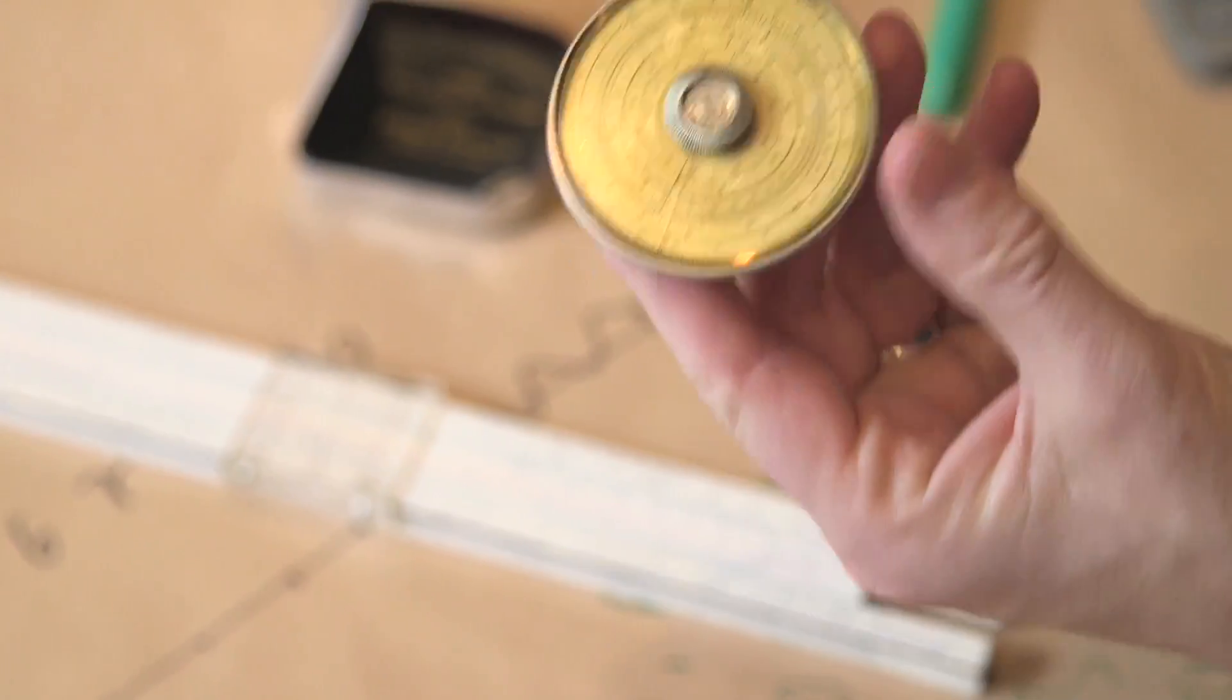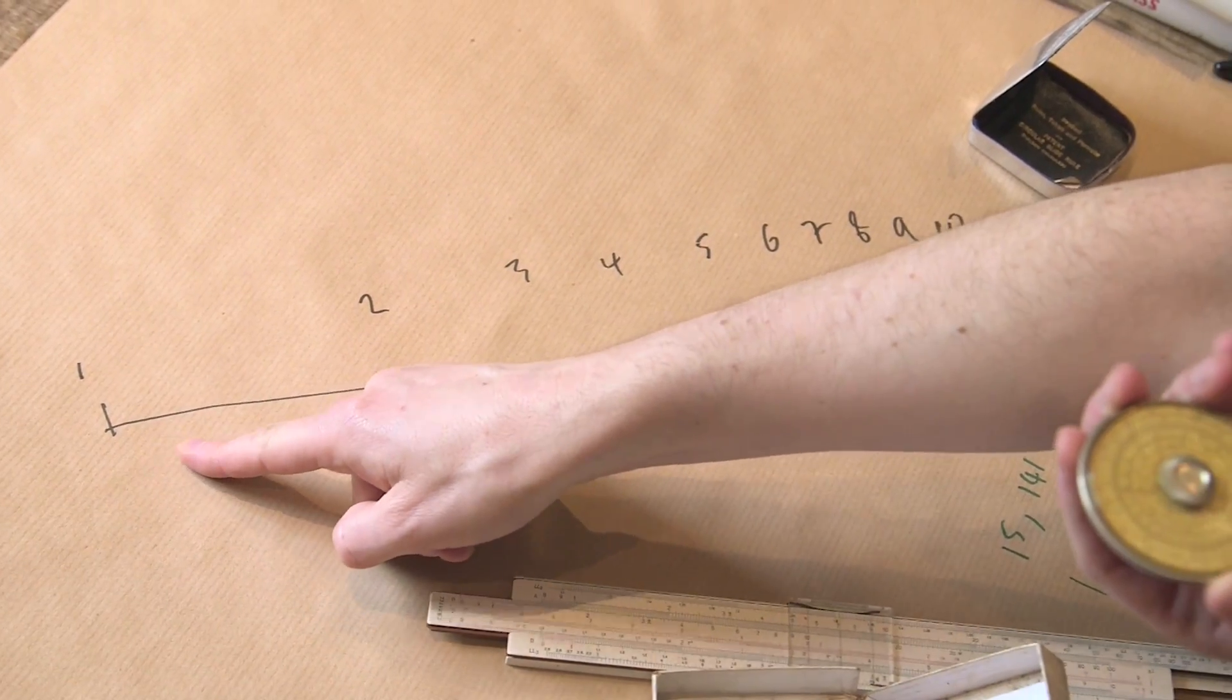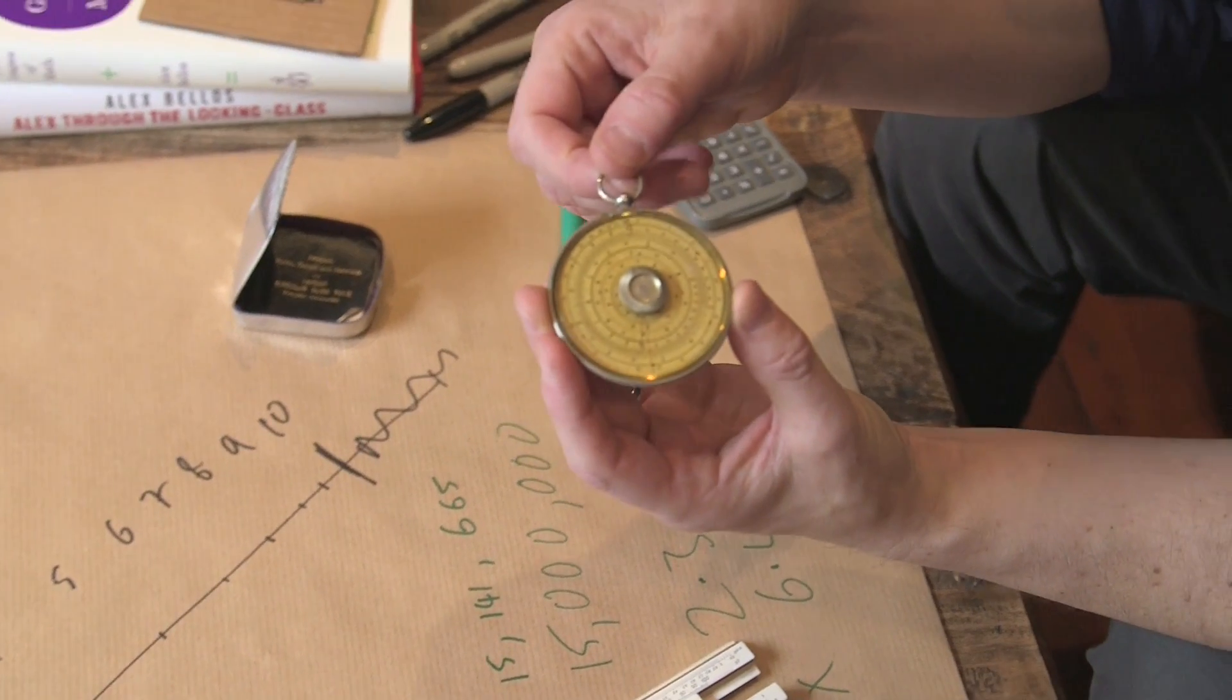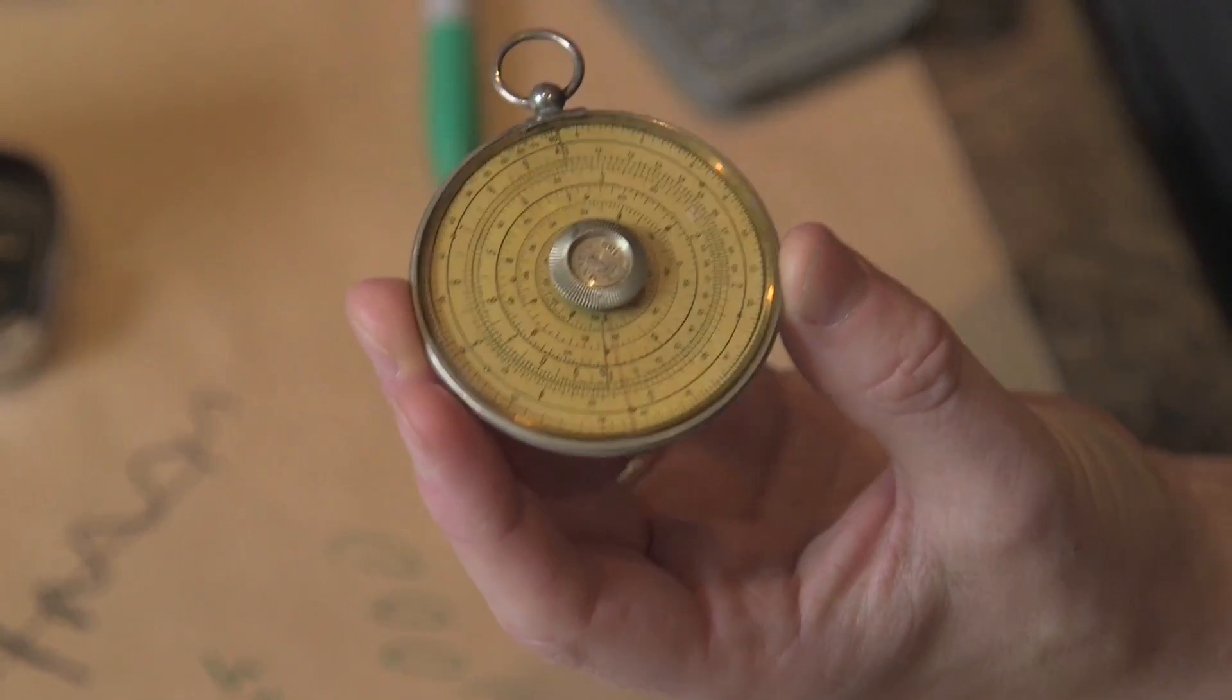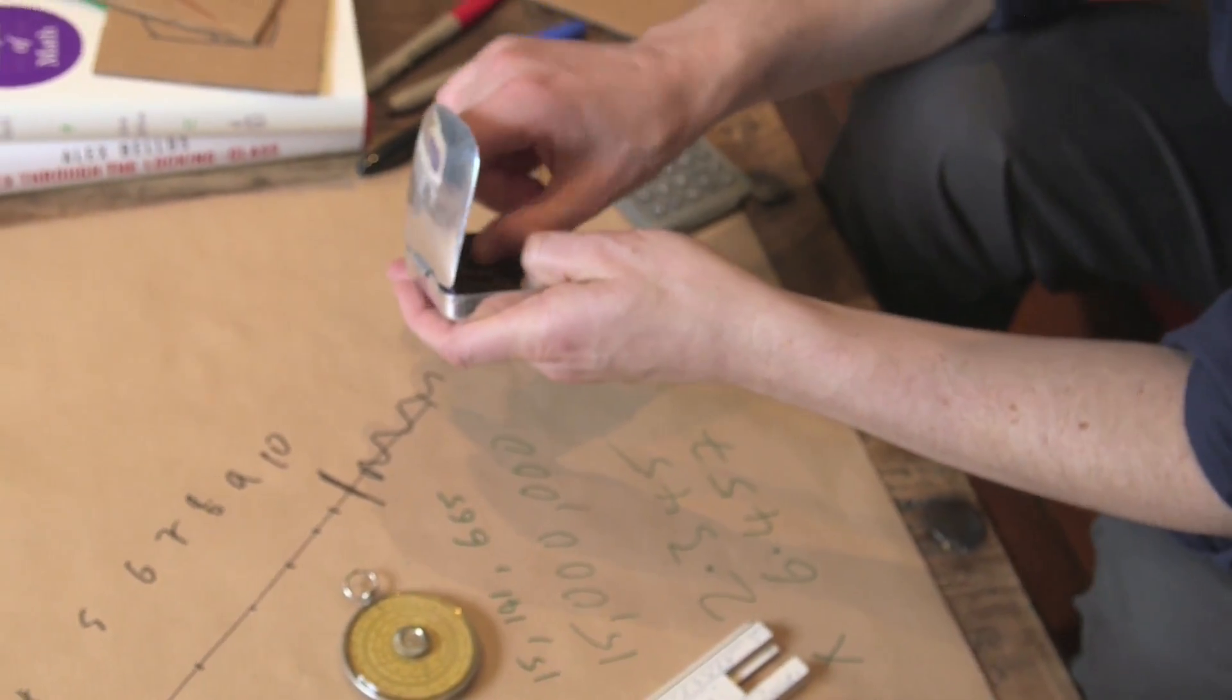So what this is, is it is a circular slide rule. So here we have the logarithmic scale along a line. In a circular slide rule, it's in a circle. Now, let's put that down for a second. This comes with this fantastic sort of set of instructions.